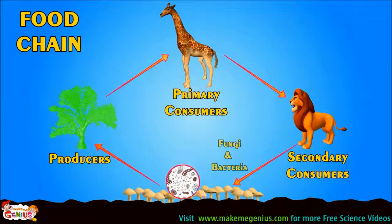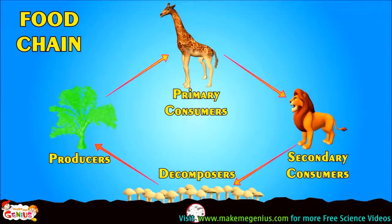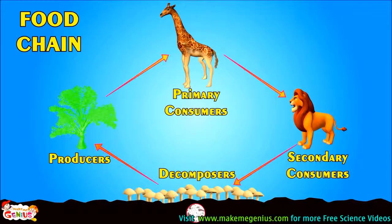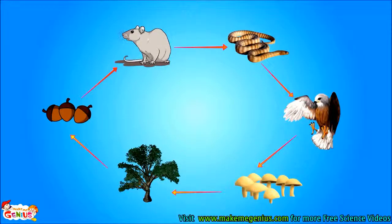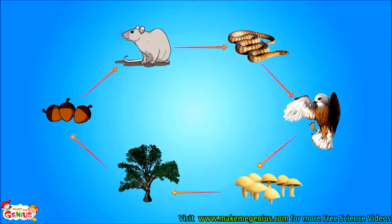These fungi and bacteria are called decomposers. Decomposers are an important part of the food chain. Let us see another food chain: a rat eats a fruit from an acorn plant, a snake eats the rat, an eagle eats the rat. The eagle dies, gets decomposed, and plants use those decomposed nutrients to produce fruit.